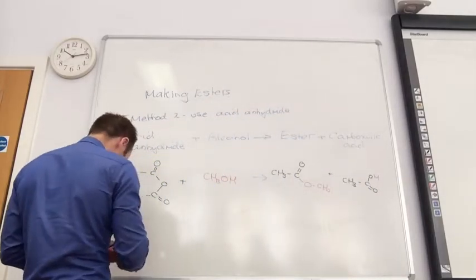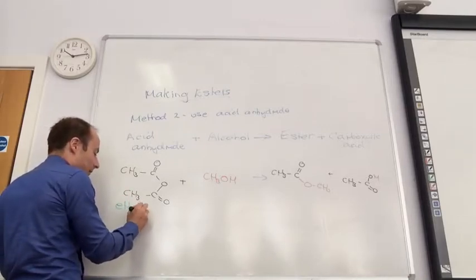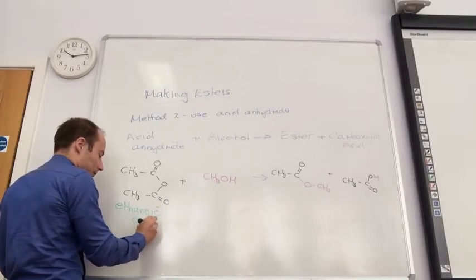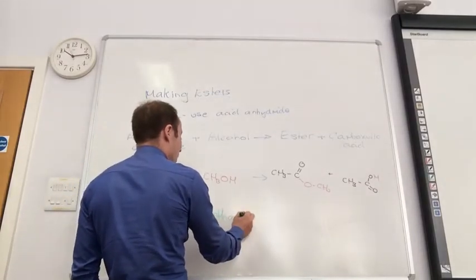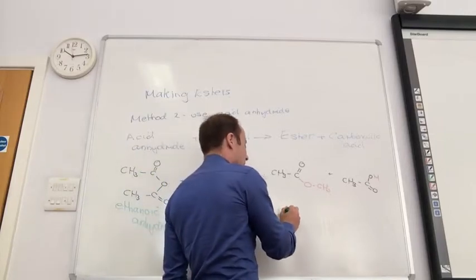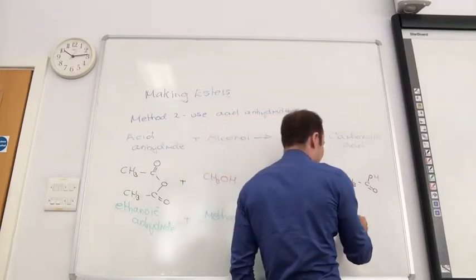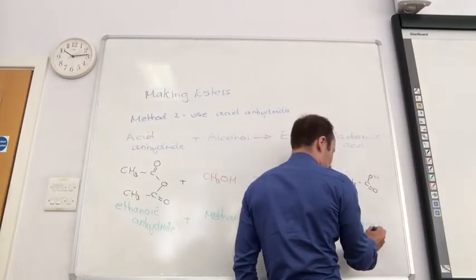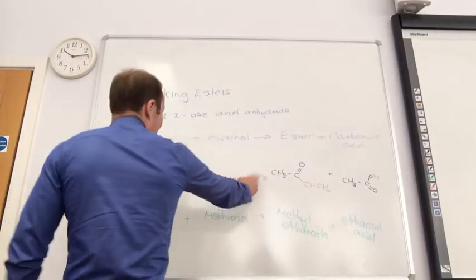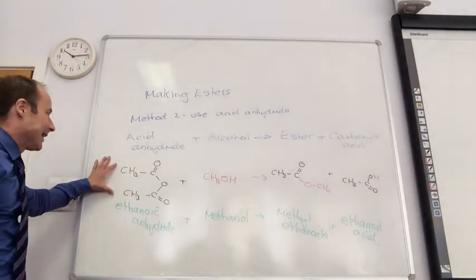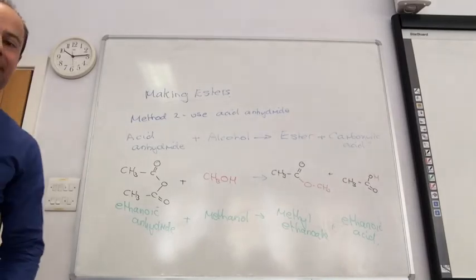So in terms of names, this guy is ethanoic anhydride. Is this one under equilibrium or not? No, no equilibrium for this one. That's the beauty of it. Plus methanol gives me methyl ethanoate plus ethanoic acid. And that's a really good way of making an ester. No equilibrium. But the pain is you've got to make your acid anhydride first. So when they're making esters, which ones do they use?